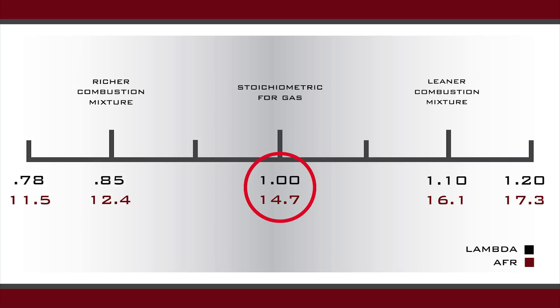When you move to doing wide open throttle tuning, a good AFR number for a naturally aspirated car would be 12.5. Cars don't usually like to go leaner than 12.5 at wide open throttle. Sometimes they'll like a little bit richer, but a nice rounded number is 12.5. You can see that equates to a lambda number of 0.85.